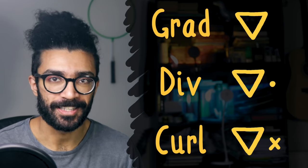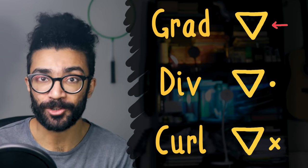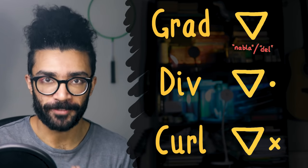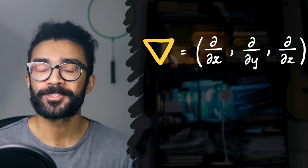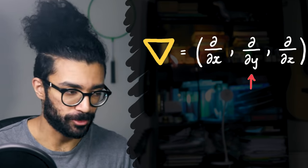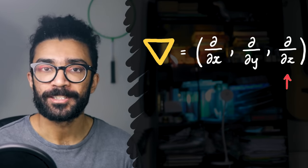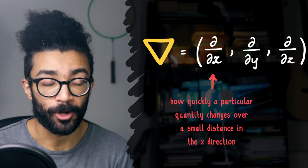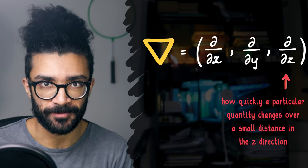To understand the grad, div and curl operators, we need to start by thinking about this downward pointing triangle known as the nabla or del. Del can be thought of as a vector. In three dimensions it looks something like this. The components of the vector are partial derivative d by dx, partial derivative d by dy, and partial derivative d by dz. Each one of these measures essentially how quickly a particular quantity changes over a small distance in the x direction, y direction, and z direction.